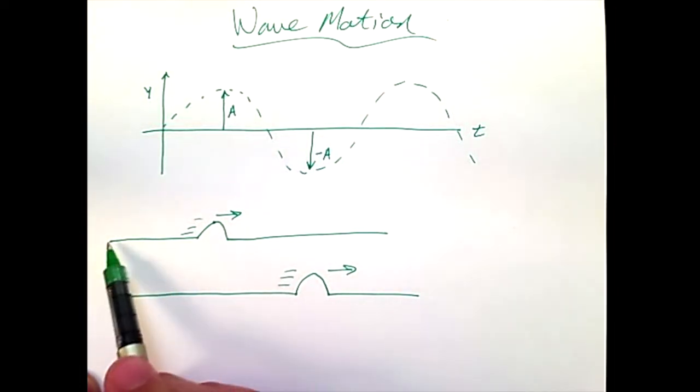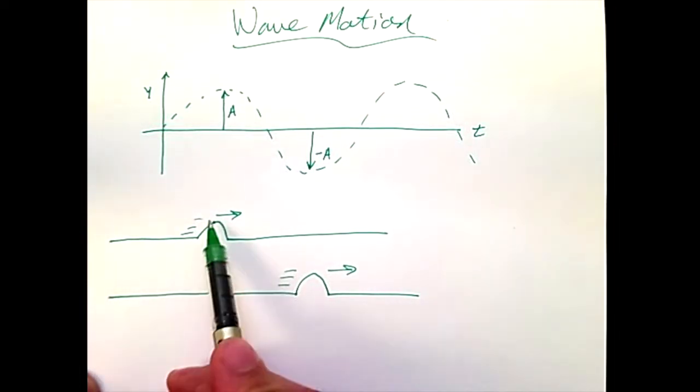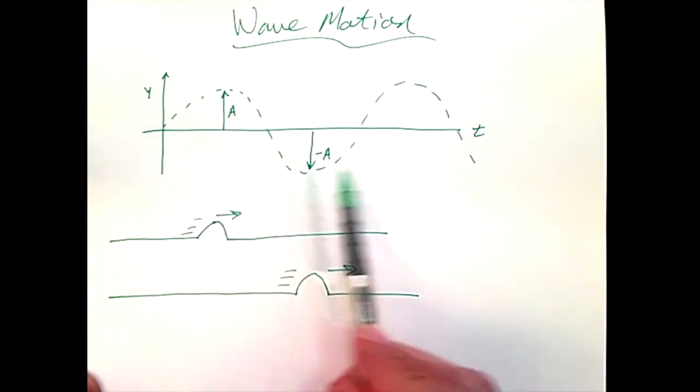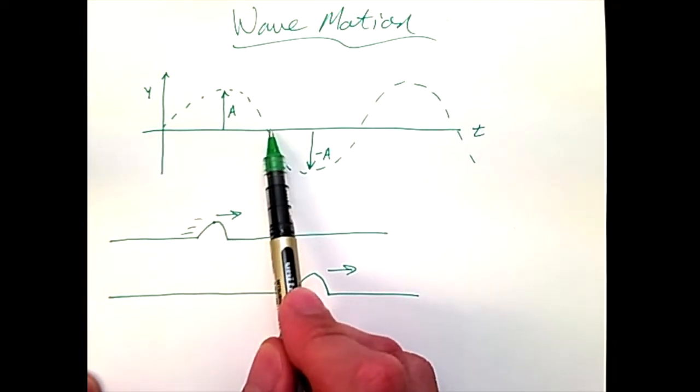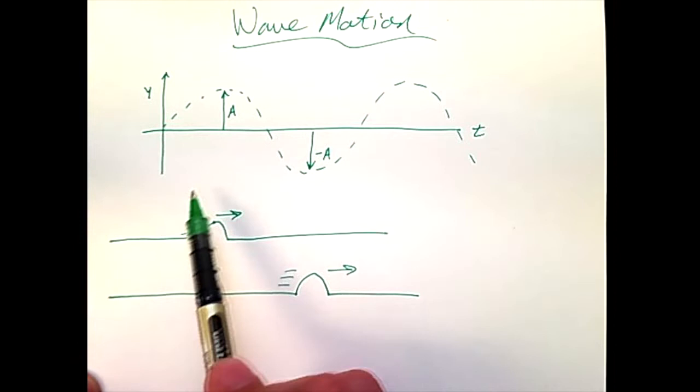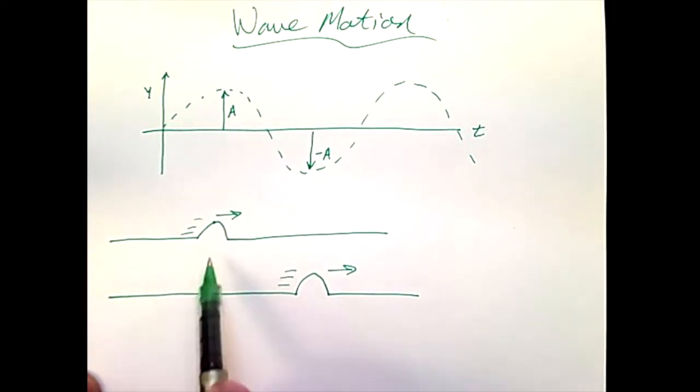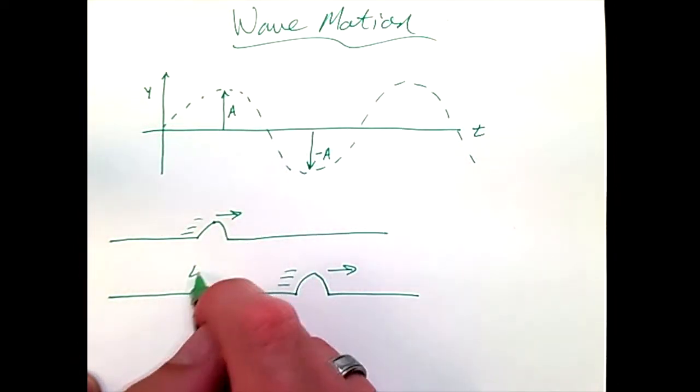The rope starts here at the equilibrium line, goes up, and then comes back down to the equilibrium line, which means that this graph is even false in the sense that it would only come down to the horizontal, to the equilibrium, and then stop. Nevertheless, what is moving across here is energy.